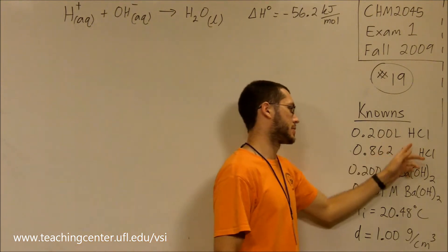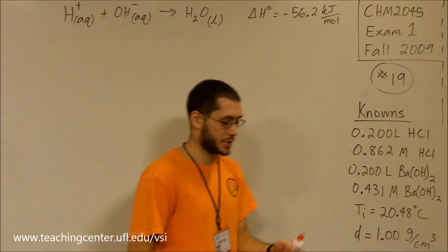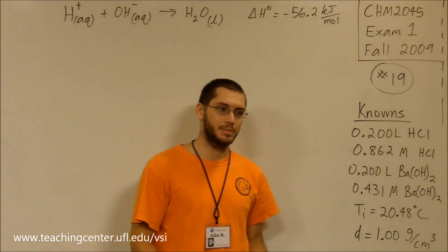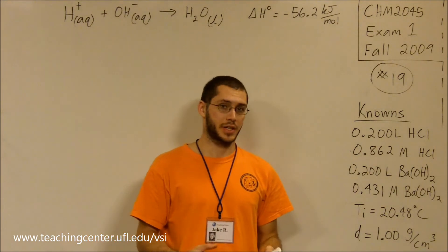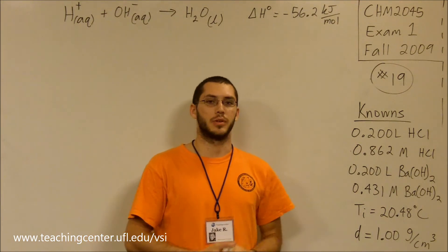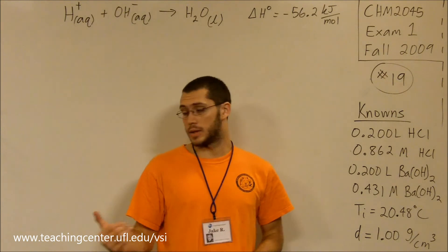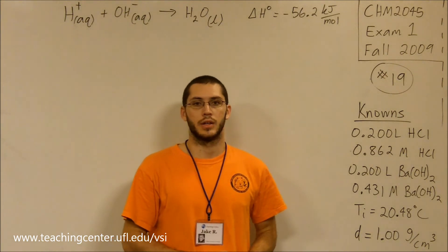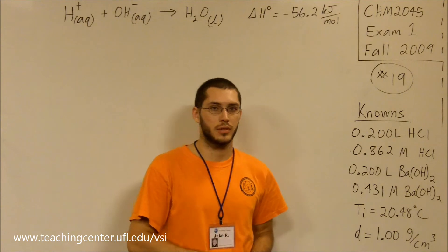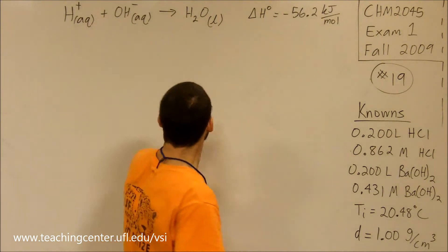That is the reaction between HCl and barium hydroxide. You should show that by writing a net ionic equation. Check back to our previous exercises on the test and look for net ionic equations. You'll end up with this.